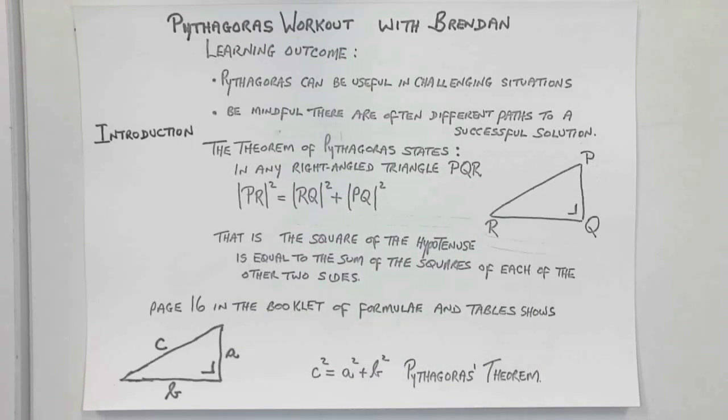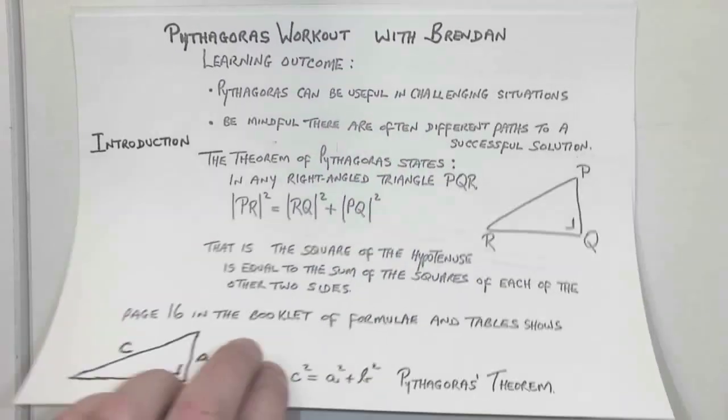A critical piece of information: remember page 16 in the booklet of formulas and tables shows you C squared equals A squared plus B squared. And that's the famous theorem.